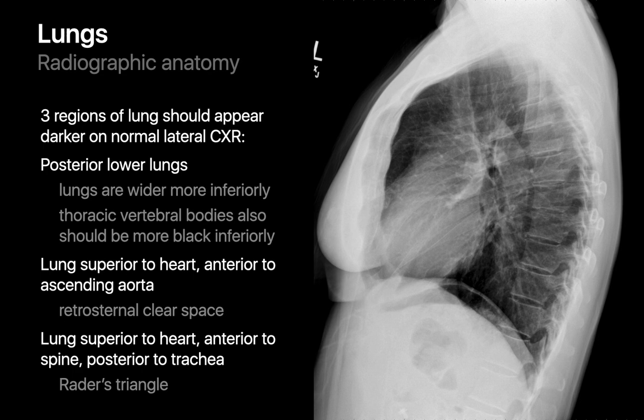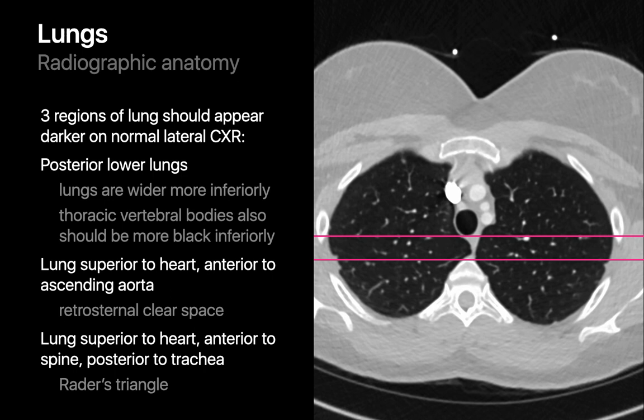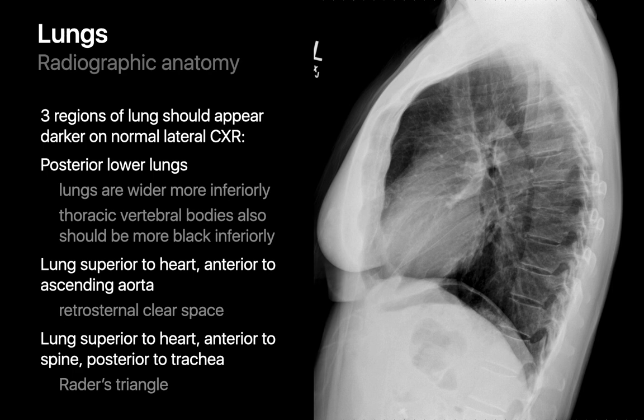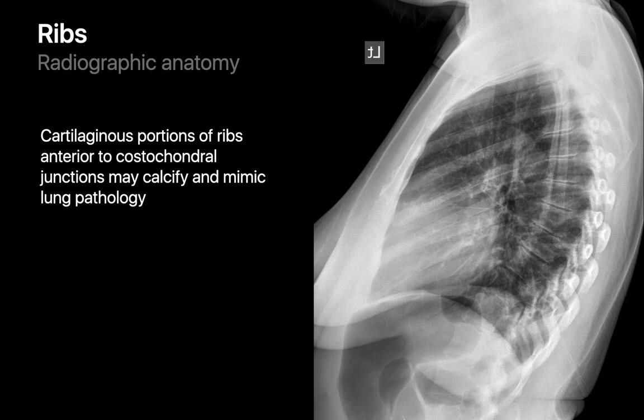The third region is the lung area superior to the heart, anterior to the spine, and posterior to the trachea. Besides the chest wall, the only solid structures x-ray photons pass through here are usually just the esophagus and a small amount of mediastinal fat. So this small region should also appear particularly lucent compared to other lung regions — some folks refer to this as Raider's triangle.